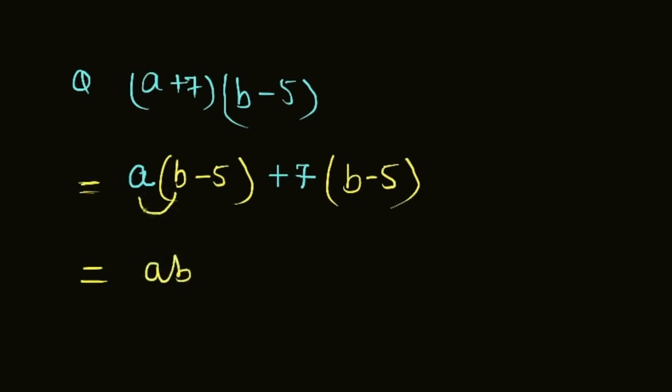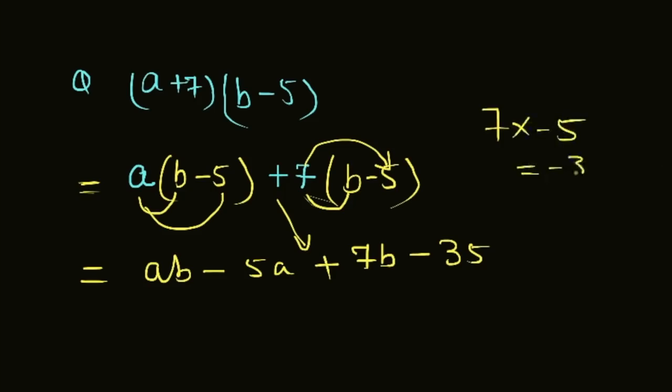By minus 5a. And then copy the plus, then 7 into b is 7b, and 7 into minus 5 is minus 35. This is the answer of this question.